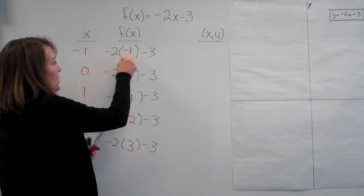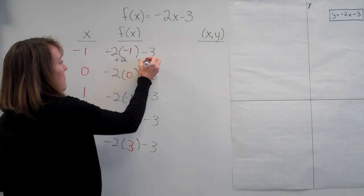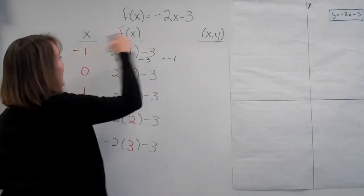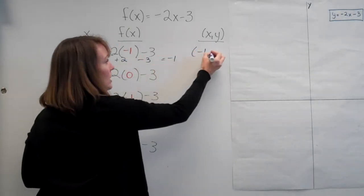So negative 2 times negative 1 is positive 2, minus 3 would give me negative 1. So my first ordered pair, my x is negative 1 and my y is negative 1.